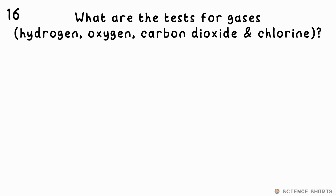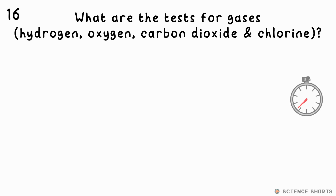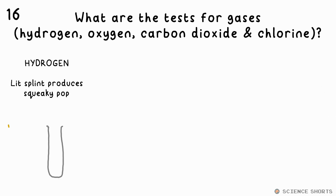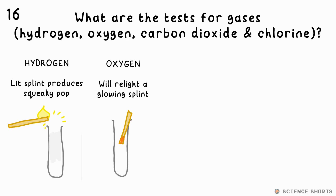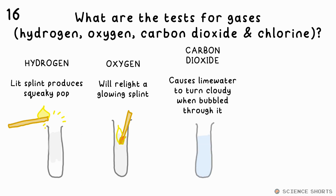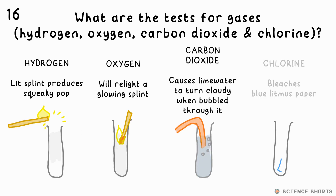What are the tests for hydrogen, oxygen, carbon dioxide, and chlorine? A lit splint will cause a test tube of hydrogen to produce a squeaky pop. Oxygen will relight a glowing splint. Carbon dioxide will cause limewater to go cloudy when bubbled through it, and chlorine bleaches blue litmus paper — it'll turn it white.